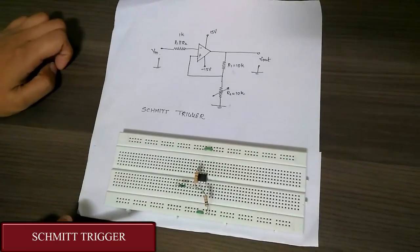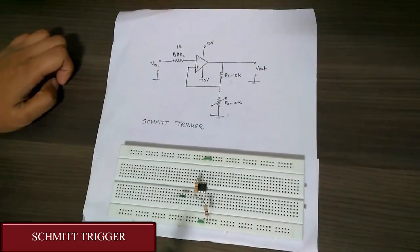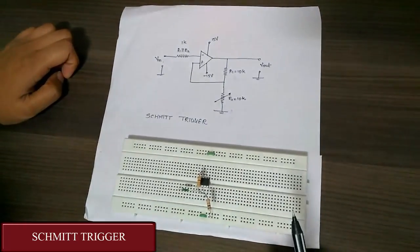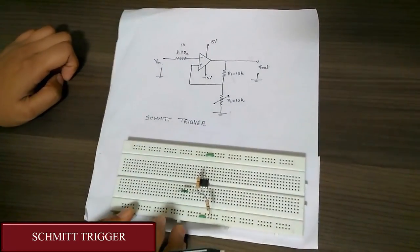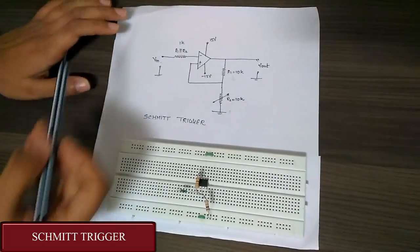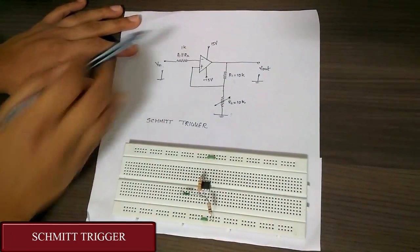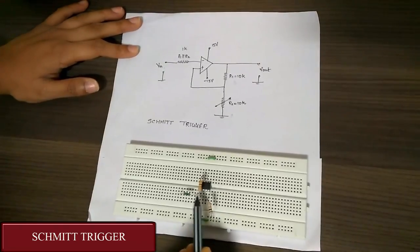So, this is the breadboard implementation of Schmitt trigger. Now, here you can see we are using IC741. We have already learnt about this in our previous practicals. Now, as you can see, input is 1K which is given to negative terminal, that is the second terminal. This is 1K.